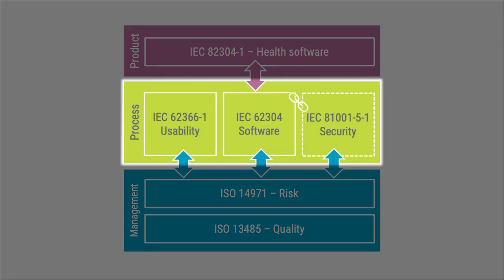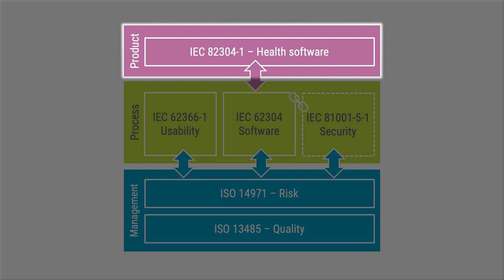The last process standard I want you to be aware of is IEC 81001-5-1, which is about security. It might not be applicable to all software products, but if you are working with standalone software, there is a high likelihood that security is something you should keep a close eye on. The next standard to cover in this overview is IEC 82304-1. It is a product standard for standalone software such as apps, PC programs, and cloud services that are supposed to run on generic hardware platforms. When working with standalone software, this standard applies to you and your product.